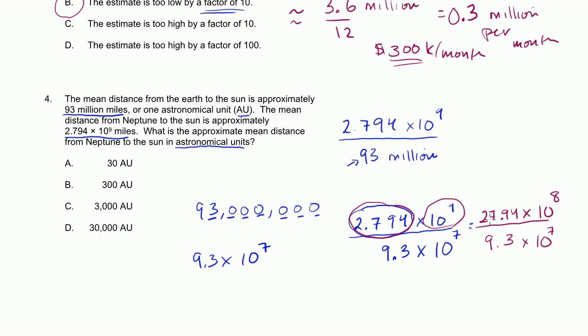And now you could say, 27.94 divided by 9.3, that's going to be approximately 3. Remember, we're trying to find the approximate mean distance. We can estimate a little bit. And then 10 to the eighth divided by 10 to the seventh, you could just subtract 7 from 8 on the exponents. So that's times 10 to the 1. So our approximate answer is going to be 3 times 10 to the 1, or 3 times 10, or approximately equal to 30 astronomical units. And that is choice A.